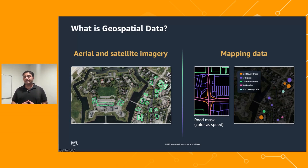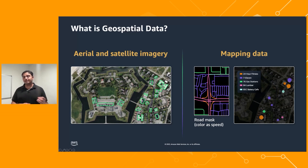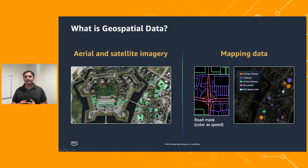Geospatial data is available everywhere. What percentage of data in your organization do you think has a geospatial component attached to it? Based on studies, we believe 60 to 80% of all data contains a geospatial component. Geospatial data has become readily available in the last decade because of two changes in the industry: the prices to launch a satellite dropped from tens of millions of dollars to less than a million dollars, and nearly every sensor in the market today is capable of emitting location data.